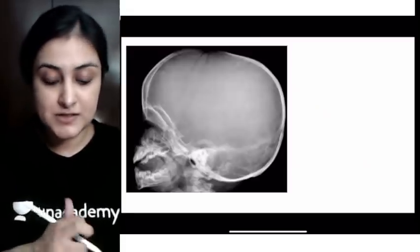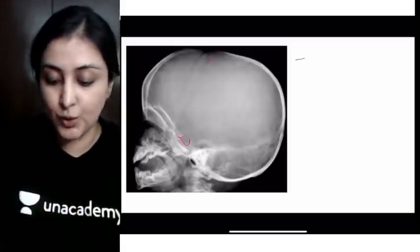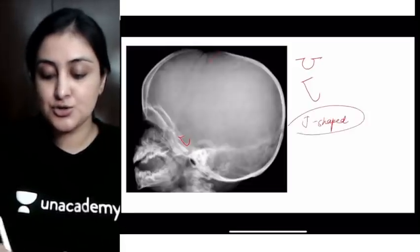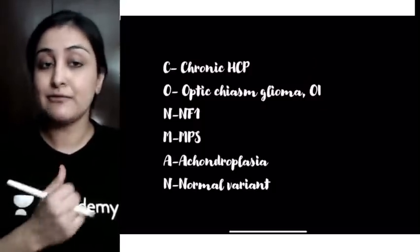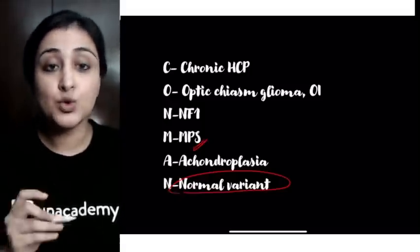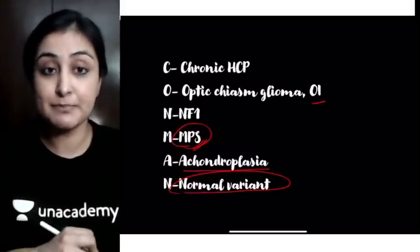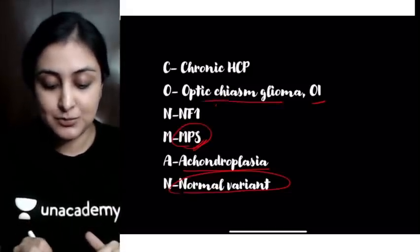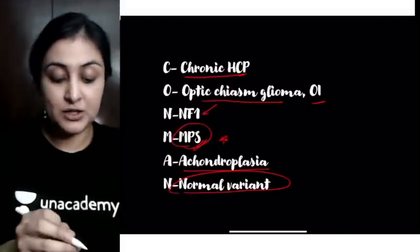This skull appearance shows an increased AP diameter with a sella shaped like a 'J' — a J-shaped sella. This is associated with various skeletal dysplasias. A mnemonic to remember is CORN MAN — conditions where a J-shaped sella can be seen. Most importantly, it includes mucopolysaccharidosis, and can also be seen in achondroplasia, osteogenesis imperfecta, optic chiasma glioma (associated with NF1), or chronic hydrocephalus. A J-shaped sella can also be a normal variant. The key takeaway: mucopolysaccharidosis is the most important cause.